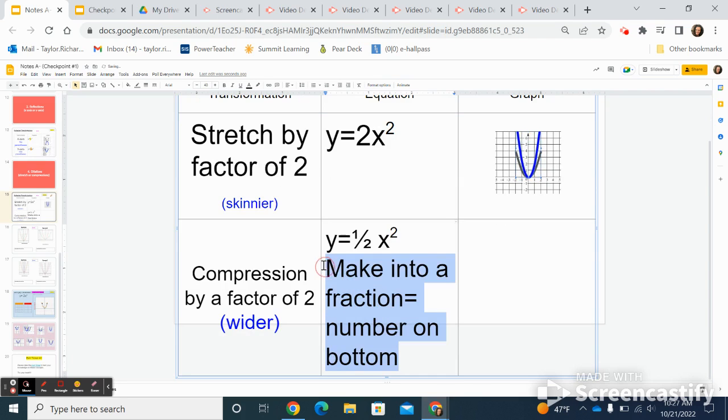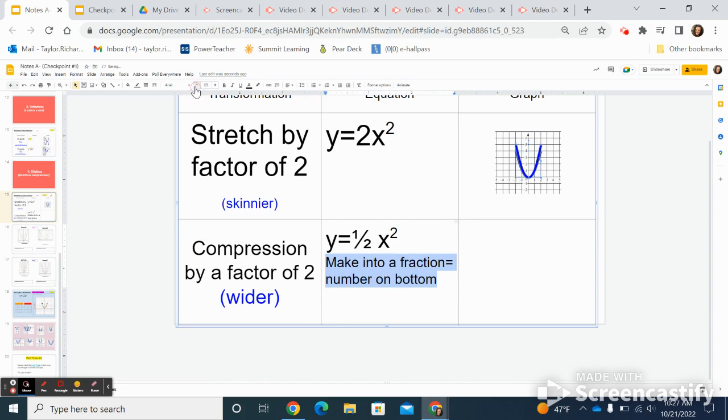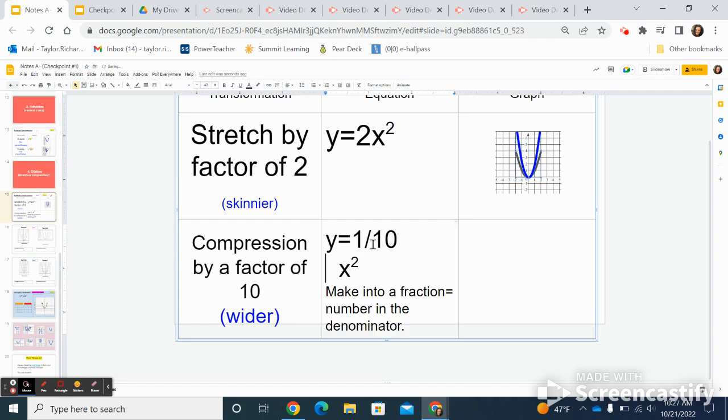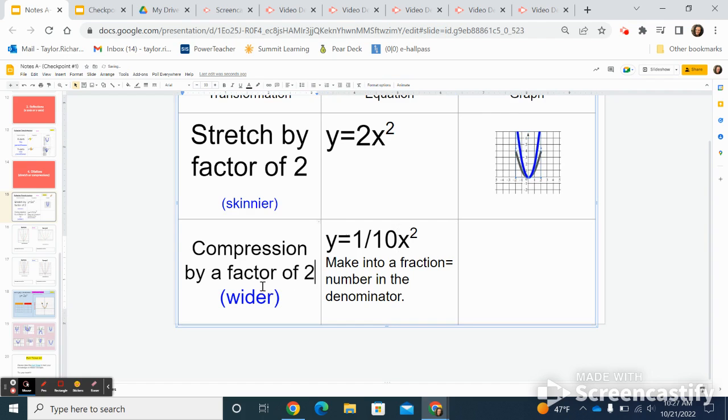You can say like make into a fraction, number on bottom. We probably should use the right vocabulary. Number in the denominator, which means down low. So if I said like compression of three, you would say one over three. If I said compression of 10, you would say one over 10. And then you still have that x squared. So whatever your number is, our number is two, that's going to be in the denominator of your fraction.